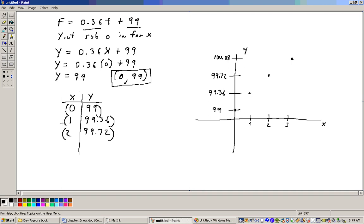If I put 2 in for X, 2 times 0.36 is 0.72 plus 99 is 99.72. So there's a point at 2, 99.72, and if you put 3 in for X, 3 times 0.36 is 1.08 plus the 99 is 100.08.